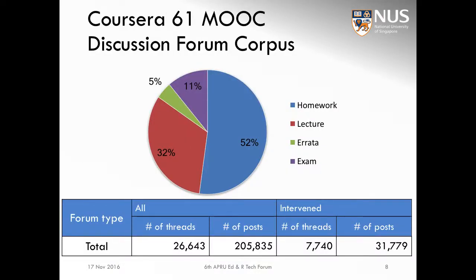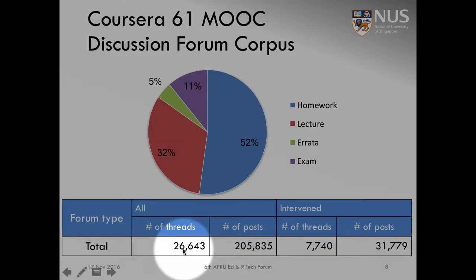We start with a corpus of 61 MOOC discussion forums. The threads come from sub-forums typically typed as homework, lecture, errata, or exam — we can see the distribution here. Among all threads, certain numbers were intervened and certain numbers were not. In fact, 26,000 threads are present in this corpus, and about 7,700 of them were actually intervened by someone on the instructing staff.